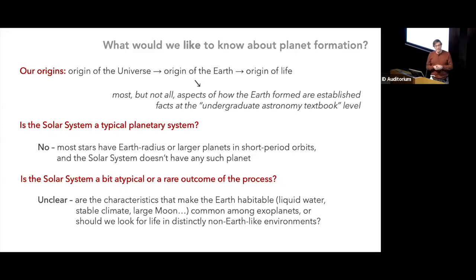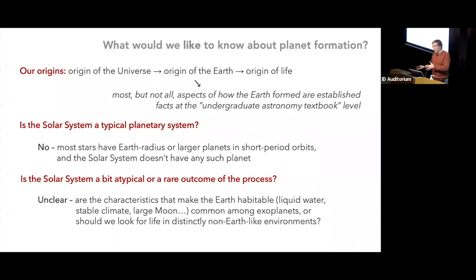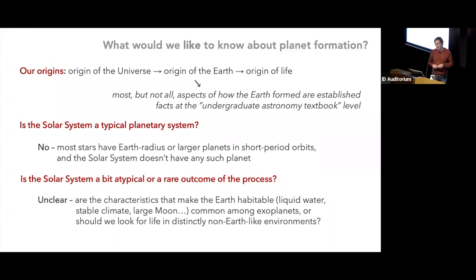Are we a bit atypical or really rare? There's a question of definition, because all planetary systems and planets are going to be a bit individual. You have to ask which aspects of similarity or difference you care about. A lot of people care about whether planets are habitable and whether we might find evidence of life in planetary atmospheres. An important metric is whether the characteristics that make Earth habitable are shared by many other planets — and that, observationally, remains unclear.